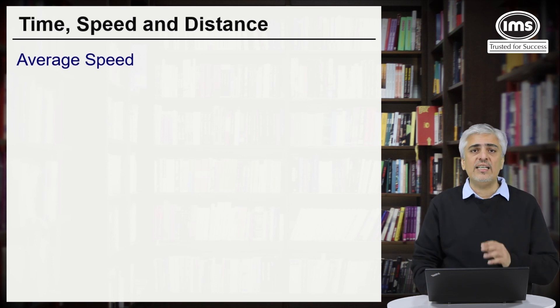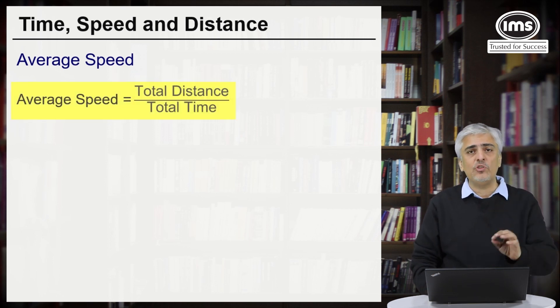So what we would suggest is that instead of doing that every time, if you use this formula: average speed is total distance travelled upon total time taken. So whenever you come across an average speed question, if you use this method you will never go wrong. Let's look at some examples and maybe some other methods to find average speed.